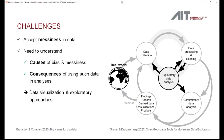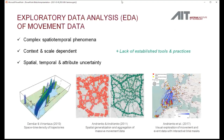We have to accept that and learn to understand what the causes of bias are — for example, which groups are represented, overrepresented, or underrepresented in our data set. We need to understand the consequences of using this data in our analysis, and we need tools that allow us to gain understanding and at least estimate those consequences. Data exploration and data analysis sit at the center of the data science circle — going from data collection and processing to confirmatory data analysis and reports. In the middle, you need this data exploration: am I still on the right path? Is the data appropriate? Do I need to clean data?